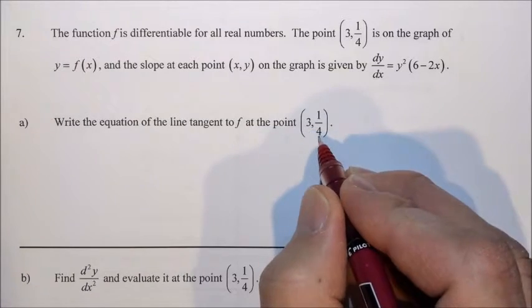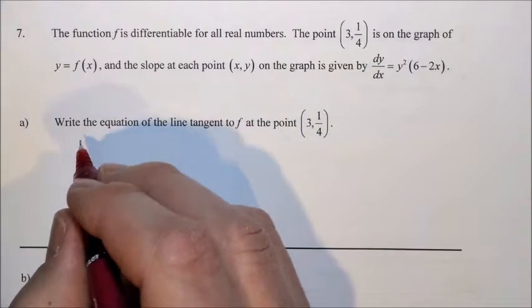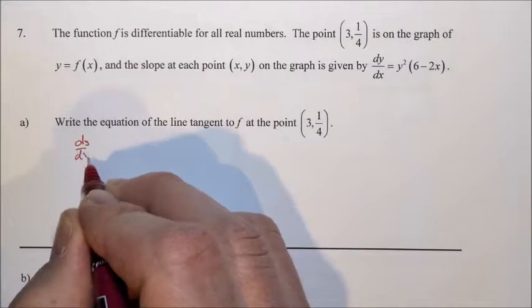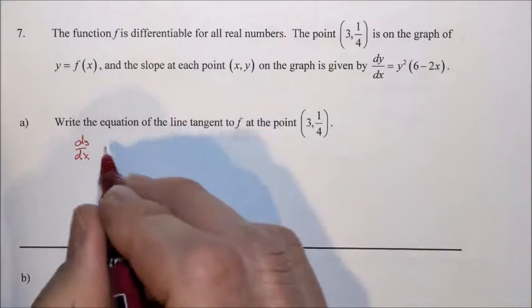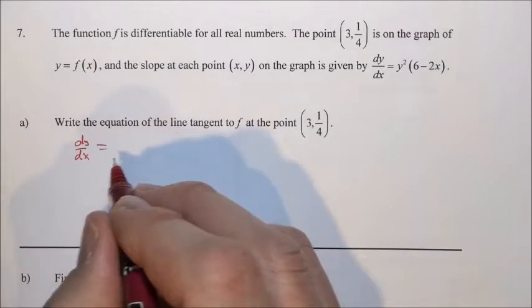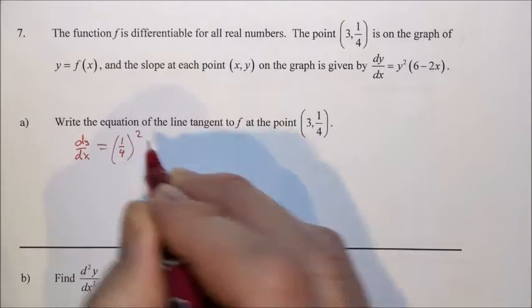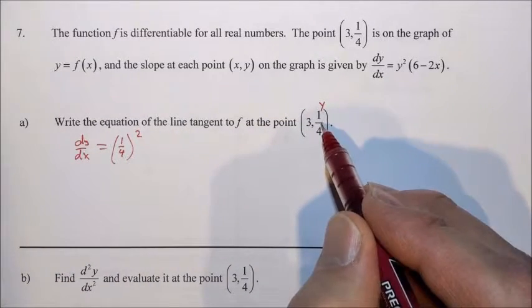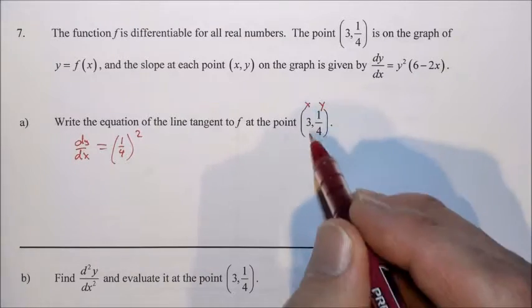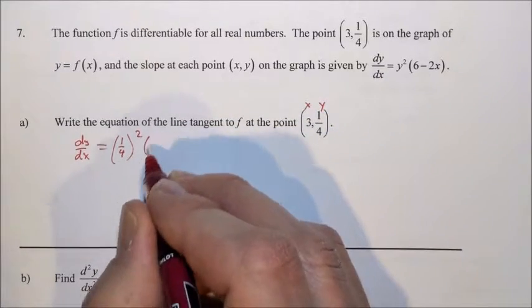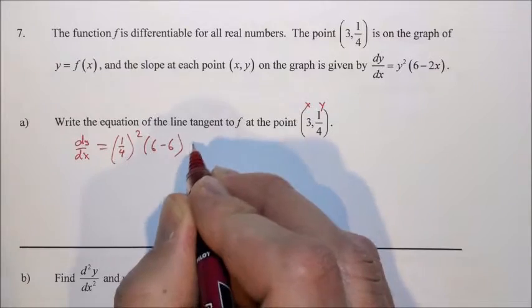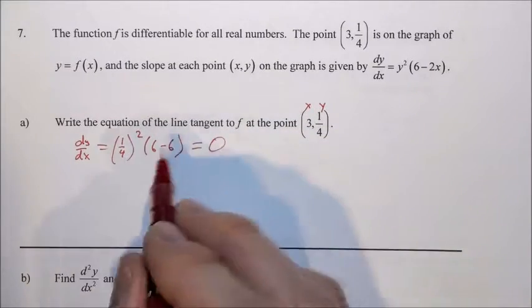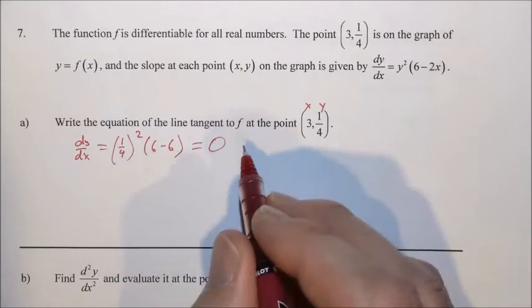So we have to plug (3, 1/4) into dy/dx because we need the slope of our tangent. We have 1/4 squared, because we're plugging 1/4 in for y, we have to plug 3 in for x. So we have 6 minus 6. So our keen eye notices that this is going to be equal to 0. So the slope is 0.